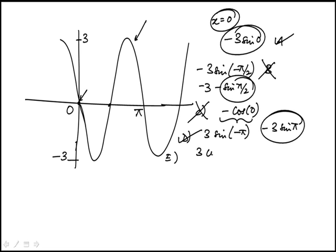e would be three cosine minus pi over two and that's going to be zero. So e also works. So we're between a, d, and e. We have to pick another point.